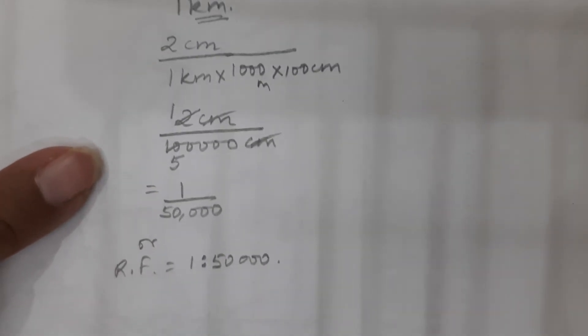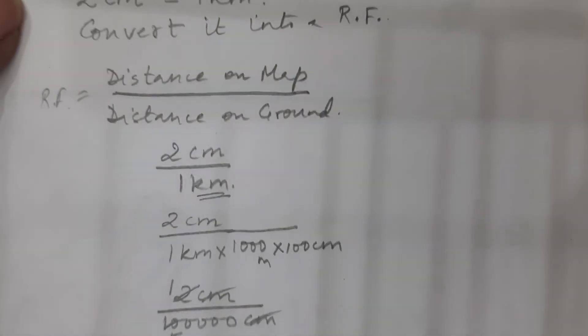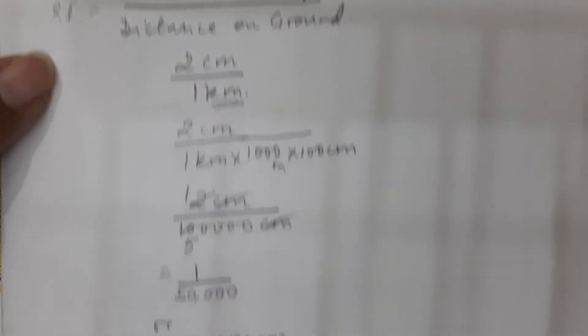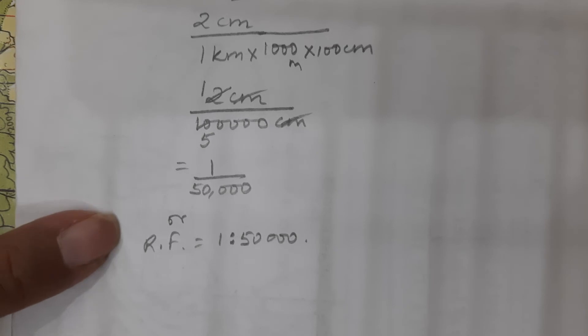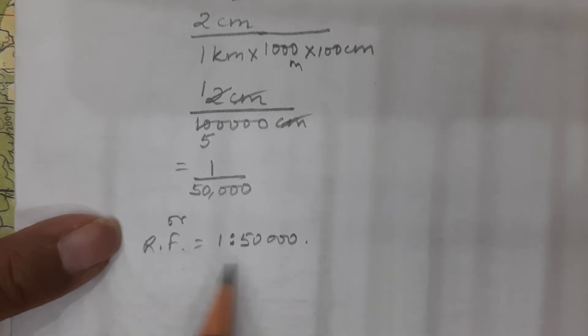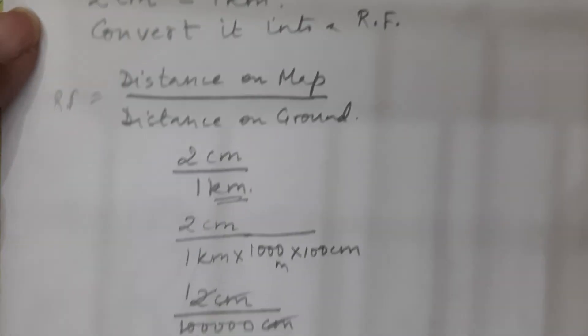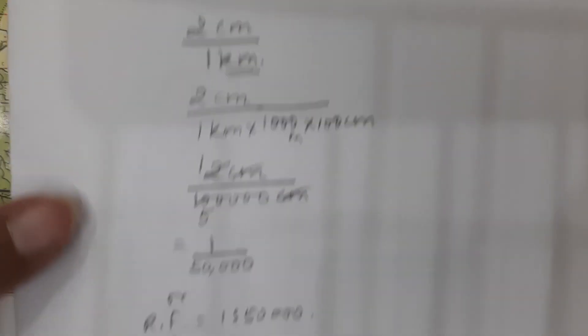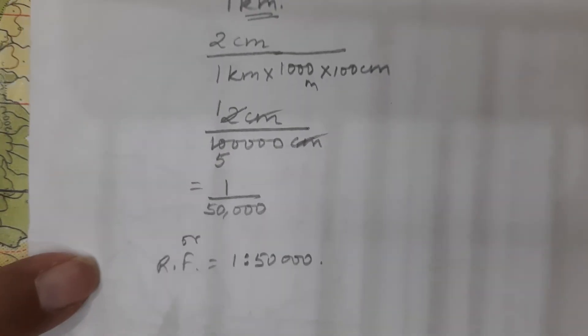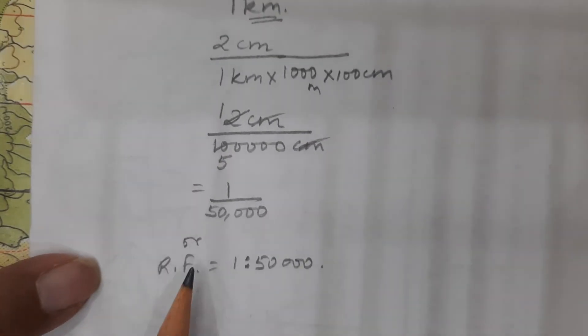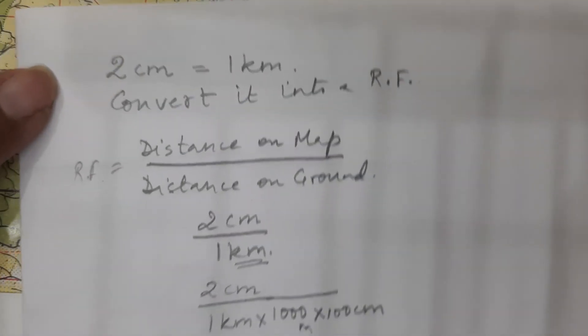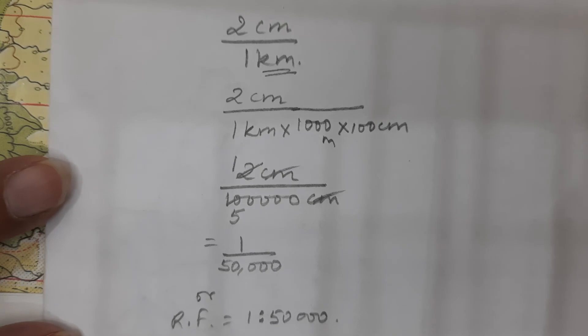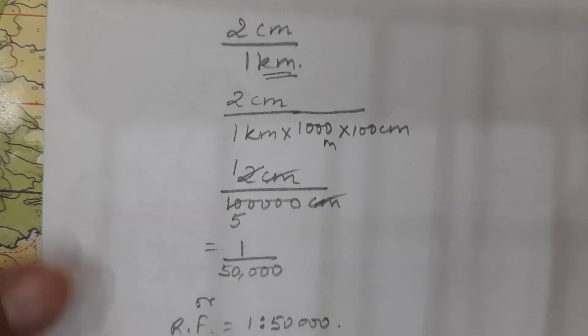In this manner children, the statement that you have in your map and the RF, they have to match because now the ratio of both of these scales, whether it is the statement or it is the RF remains the same. I could not have taken any other RF over here for this statement because then they would not have matched and that is why in your survey maps, you will see the RF as 1 is to 50,000.